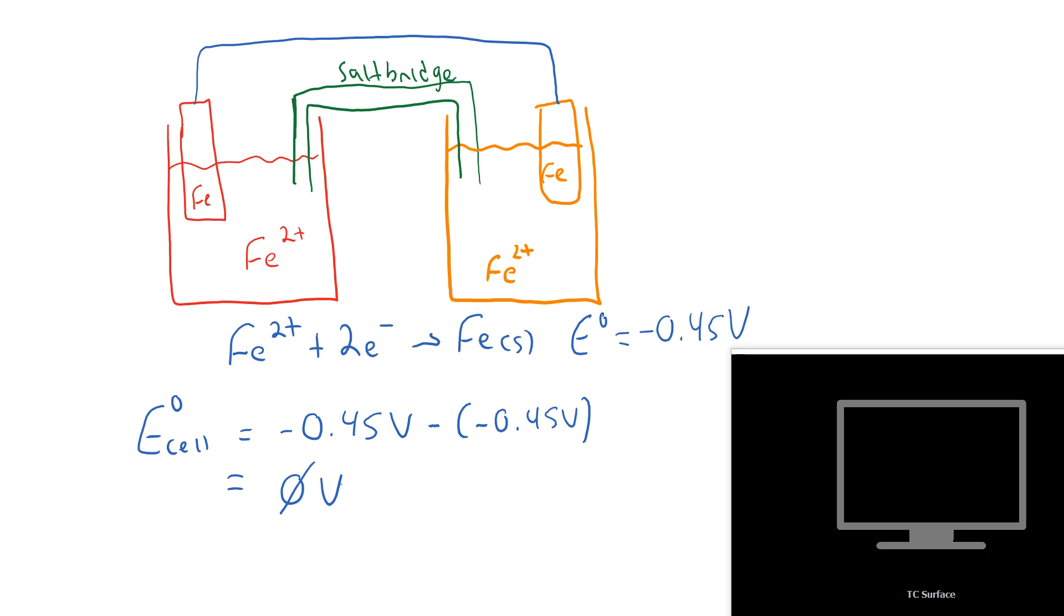So we got a whopping 0 volts there. Well, that's not very exciting. So what we're going to do, remember that when we have 0 volts, we have everything at standard conditions. So we have one molar on the left, we have one molar concentration of iron 2+ on the right. And what we're going to do is change that a little bit.